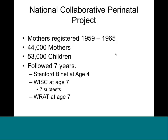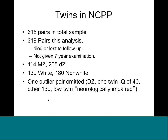The NCPP had 53,000 children born to 44,000 mothers, followed for seven years with the Stanford-Binet and a wide range of tests. There were 600 twin pairs, 320 in this analysis — those followed up at the seven-year examination for whom zygosity was known, which wasn't as easy to establish back then as it is now.